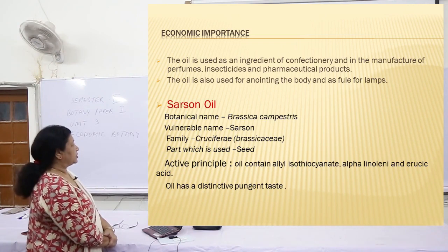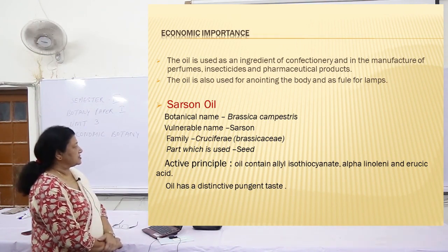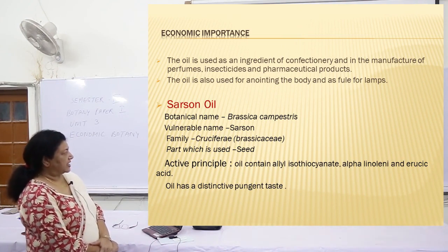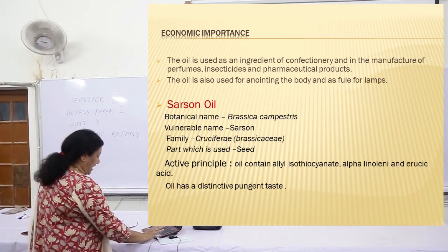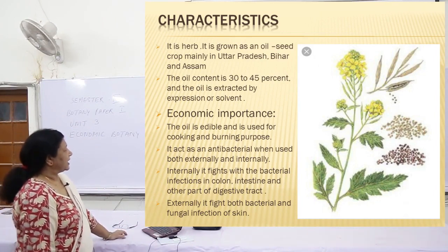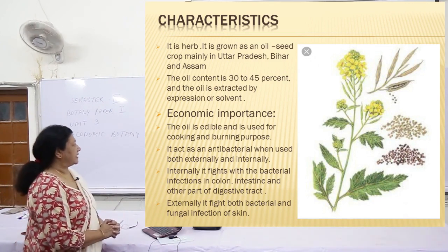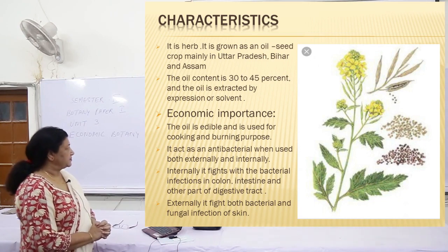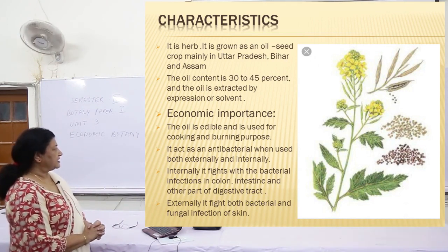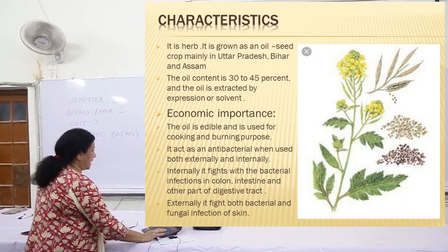Coming to sarson oil. Botanical name: Brassica campestris. Vernacular name: sarson. Family: Cruciferae, now called Brassicaceae. Part used is the seed. The active principle: the oil contains allyl isothiocyanate, alpha-linolenic acid and erucic acid. The oil has a very pungent smell. It is a herb grown in UP, Bihar and Assam. Oil content is 30 to 45% and is extracted by expression or by solvent. Economic importance: the oil is edible and used for cooking and burning purposes. It acts as an antibacterial when used both externally and internally. Internally, it fights bacterial infections in the colon, intestine and other parts of the digestive tract. Externally, it fights both bacterial and fungal infections of the skin.